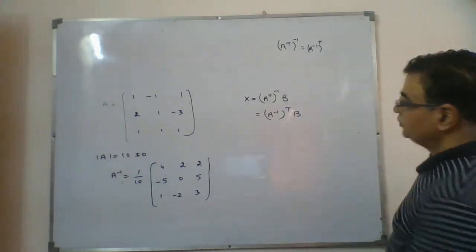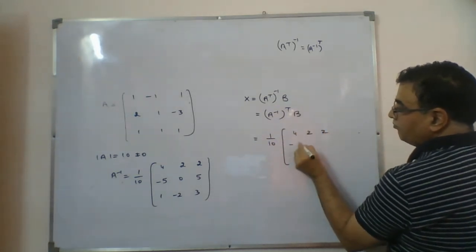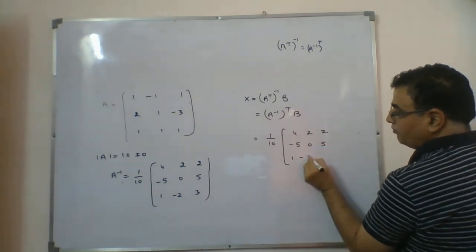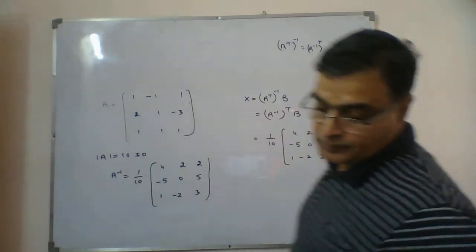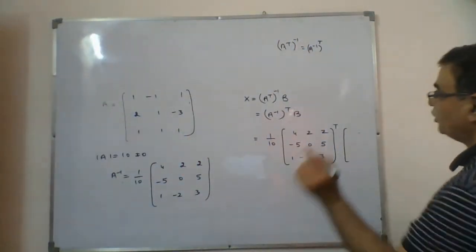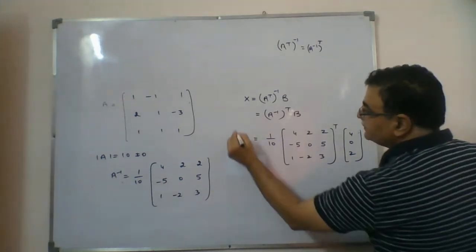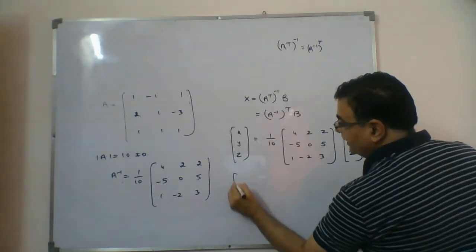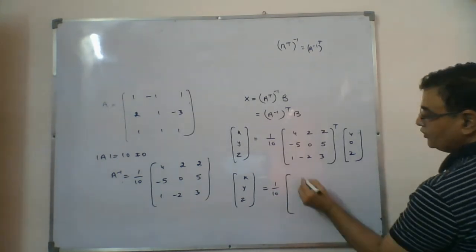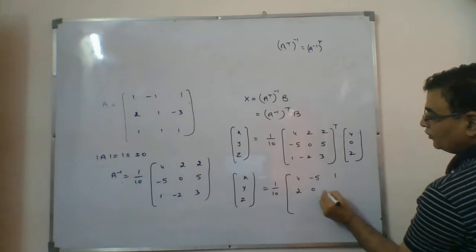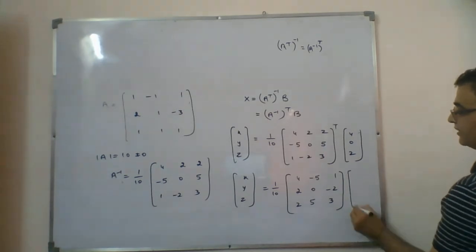Placing the value: (1/10) times A inverse transposed, which gives rows 4, -5, 1; then 2, 0, -2; then 2, 5, 3. And B was 4, 0, 2. So x, y, z = (1/10) times that matrix times [4, 0, 2]. Computing row by row: first entry: 16 + 0 + 2 = 18; second entry: 8 + 0 - 4 = 4; third entry: 8 + 0 + 6 = 14.